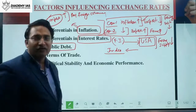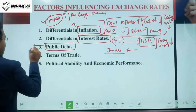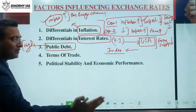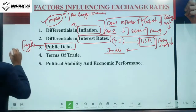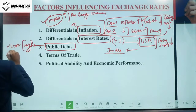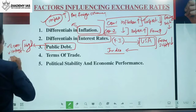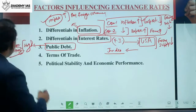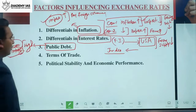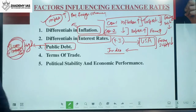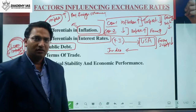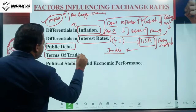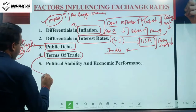The third factor is public debt. If public debt is high, the Indian government may have to take foreign currency loans. Interest must be paid on those loans, which represents an outflow of foreign currency. In the future, the loan principal must also be returned. Overall, public debt leads to future outflows of foreign currency, reducing the foreign exchange supply.